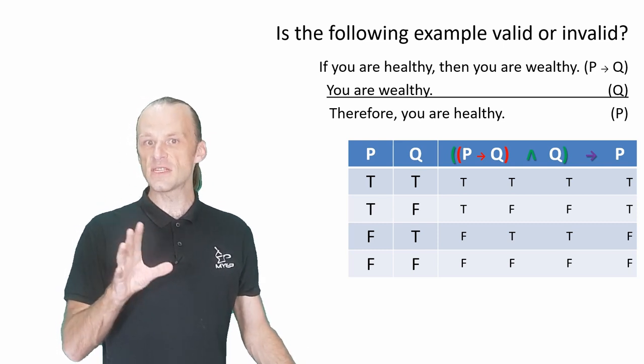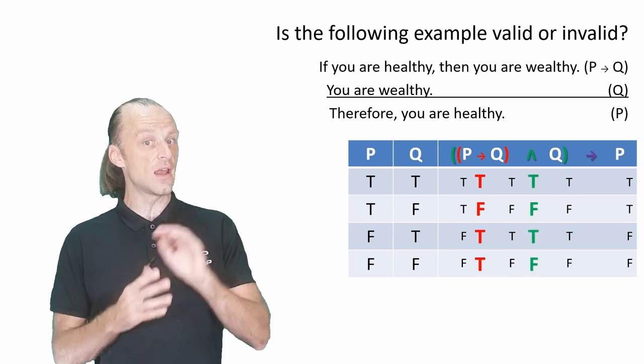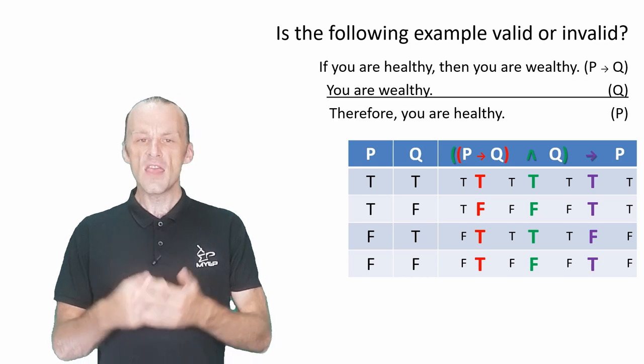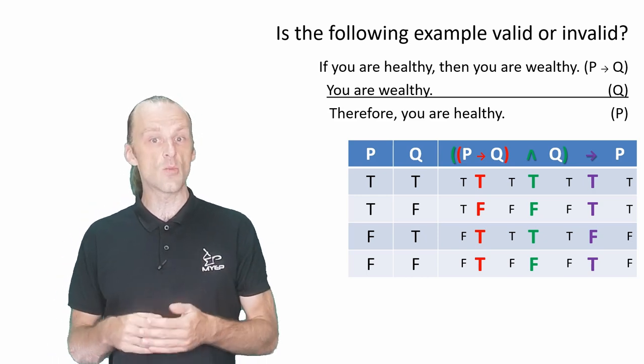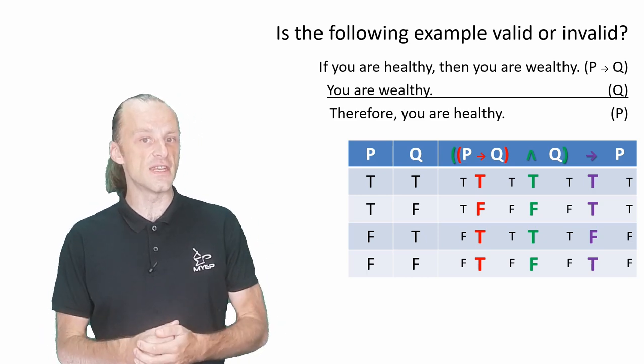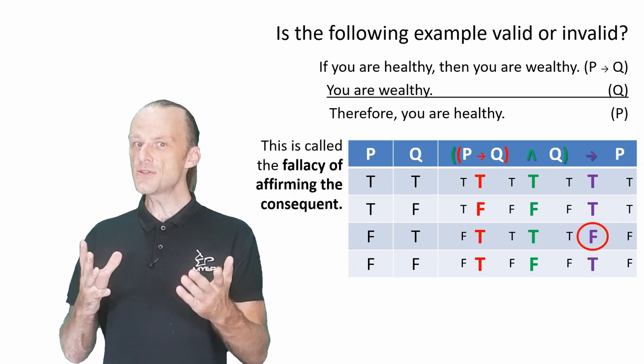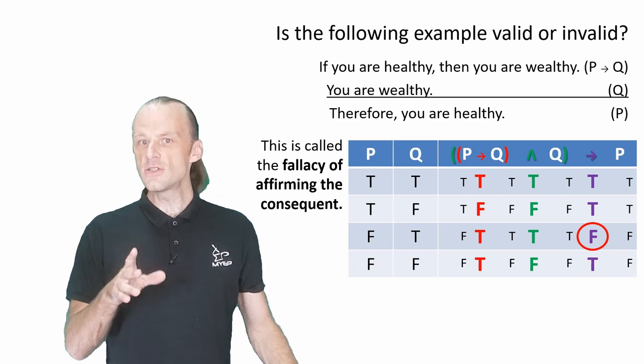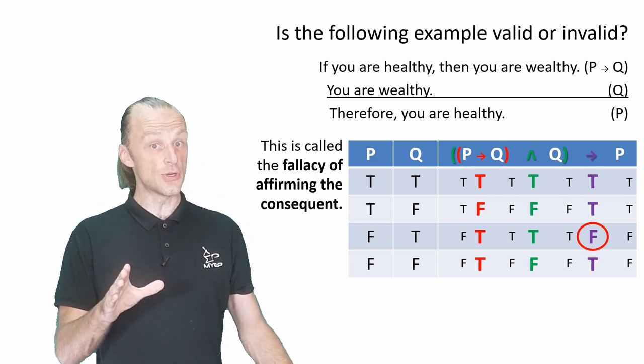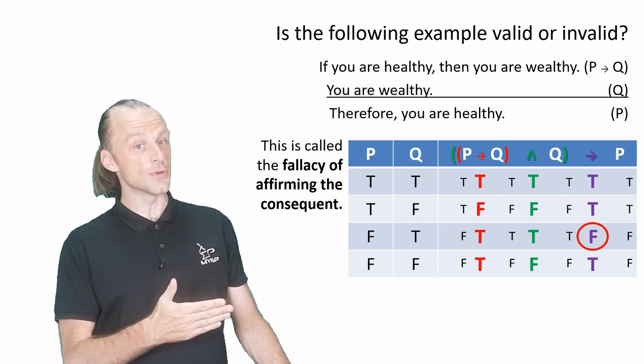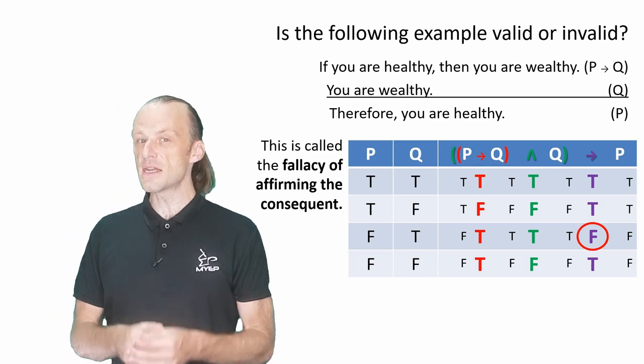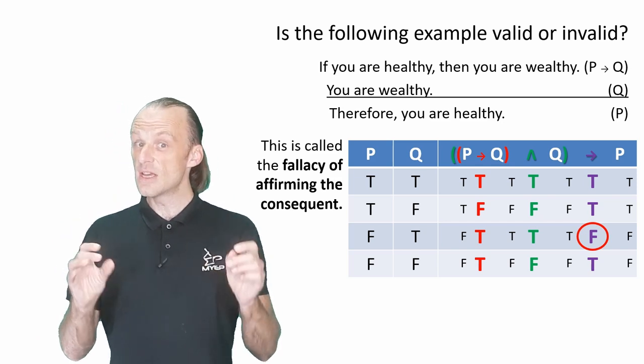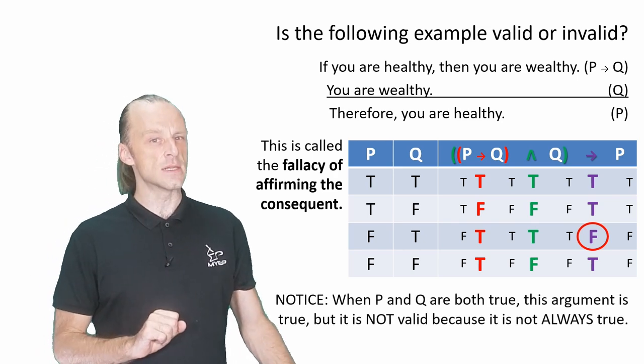Even though this table is true on three lines, we can see for ourselves that it is not always going to be true. If we follow the logic through in the same way, we find the third line is false. This is called the fallacy of affirming the consequent. Notice, when P and Q are true, the outcome is true. This might make us think it is a good argument, but this argument could be false, so it's not valid. Let's see what this means.